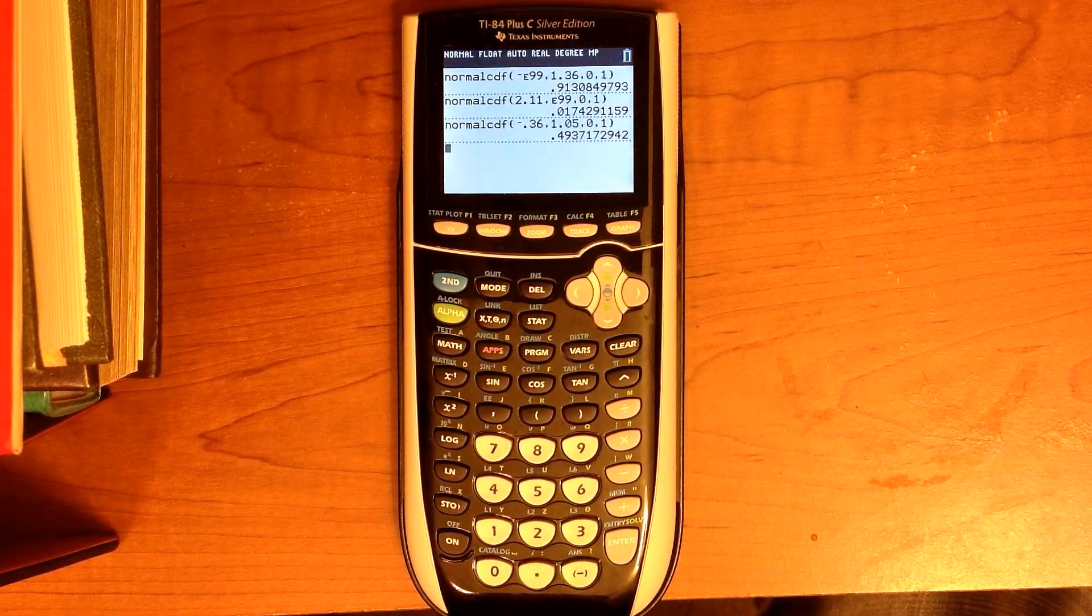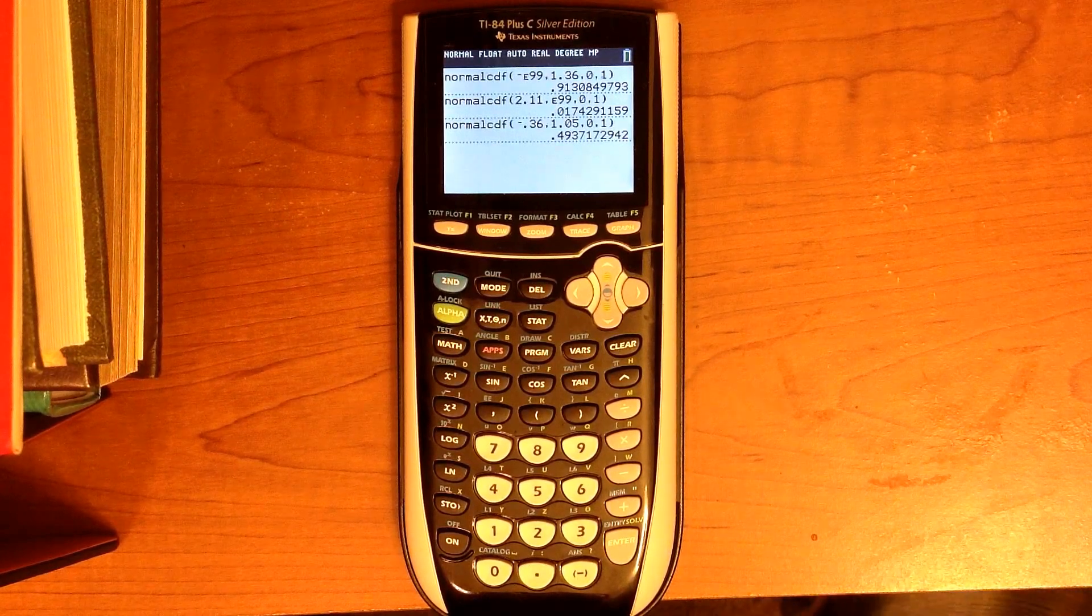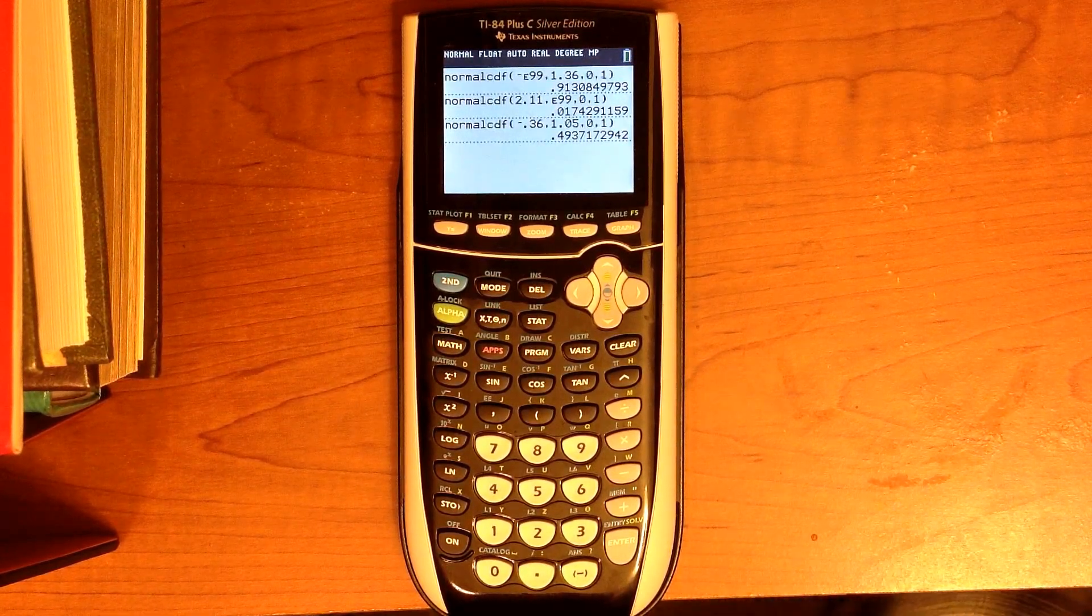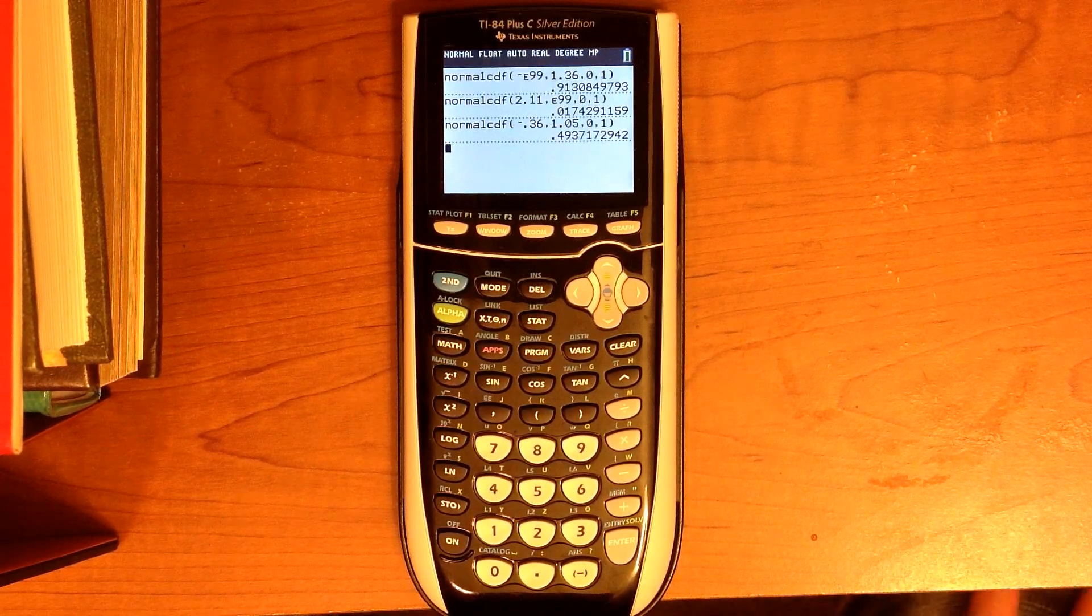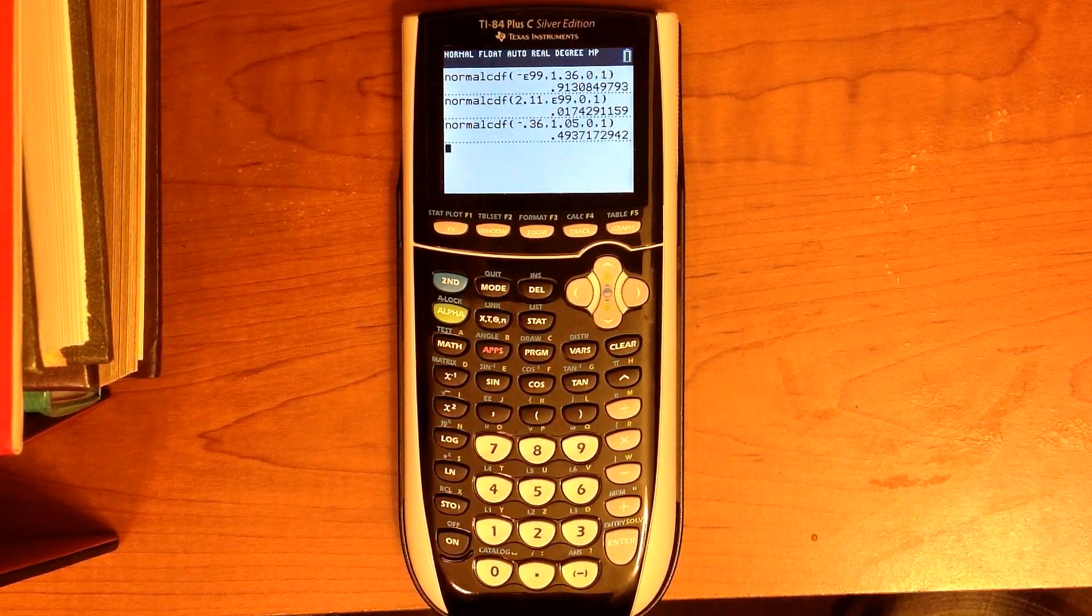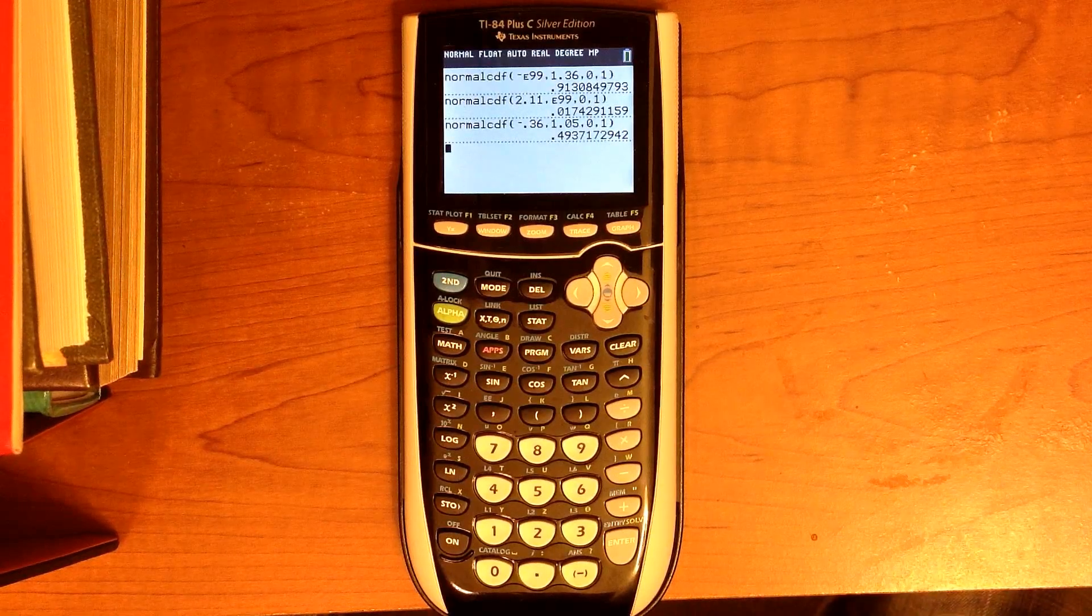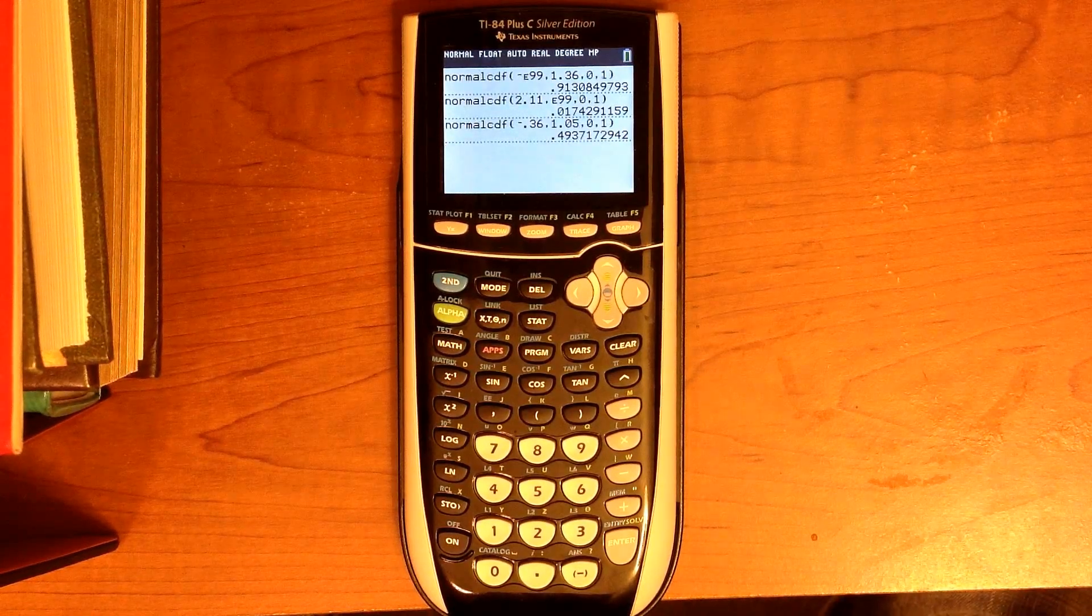Now, if you have the mean and the standard deviation of your normal distribution, you don't need to convert it to Z-score. For example, in numbers 16 to 18, we are working with young women with a mean height of 64.5 inches and a standard deviation of 2.5 inches.